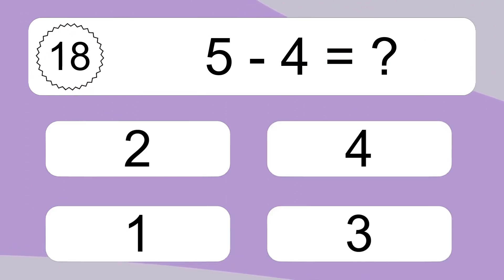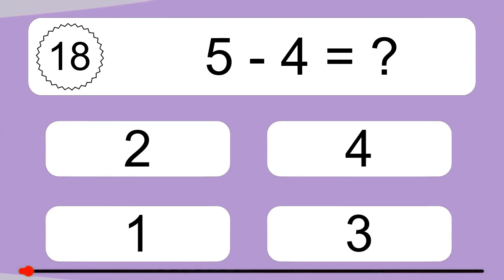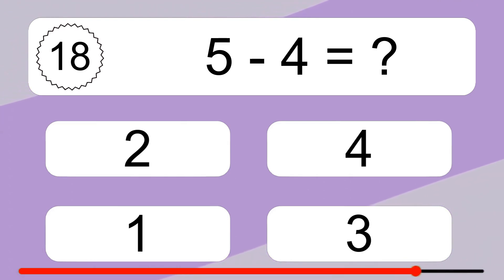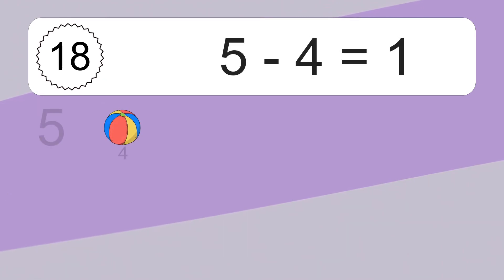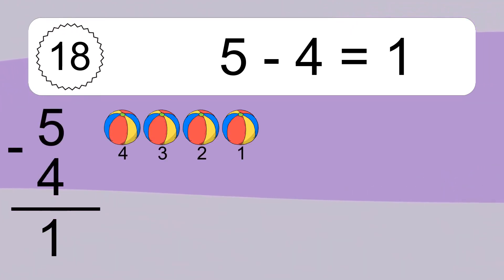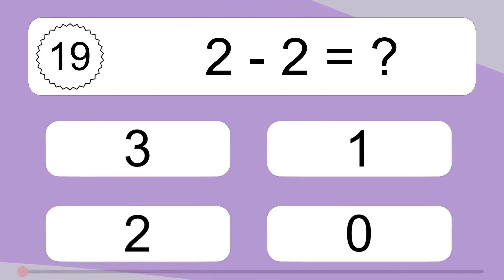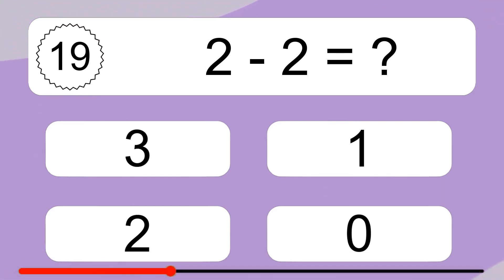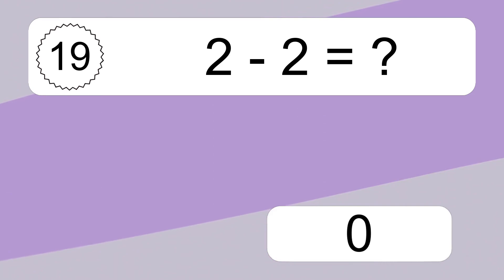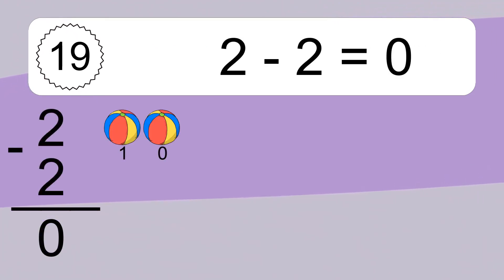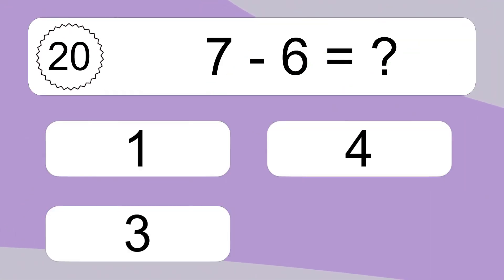5 minus 4 equals what? 5 minus 4 equals 1. Let's count it: 4, 3, 2, 1. 2 minus 2 equals what? 2 minus 2 equals 0. Let's count it: 1, 0.